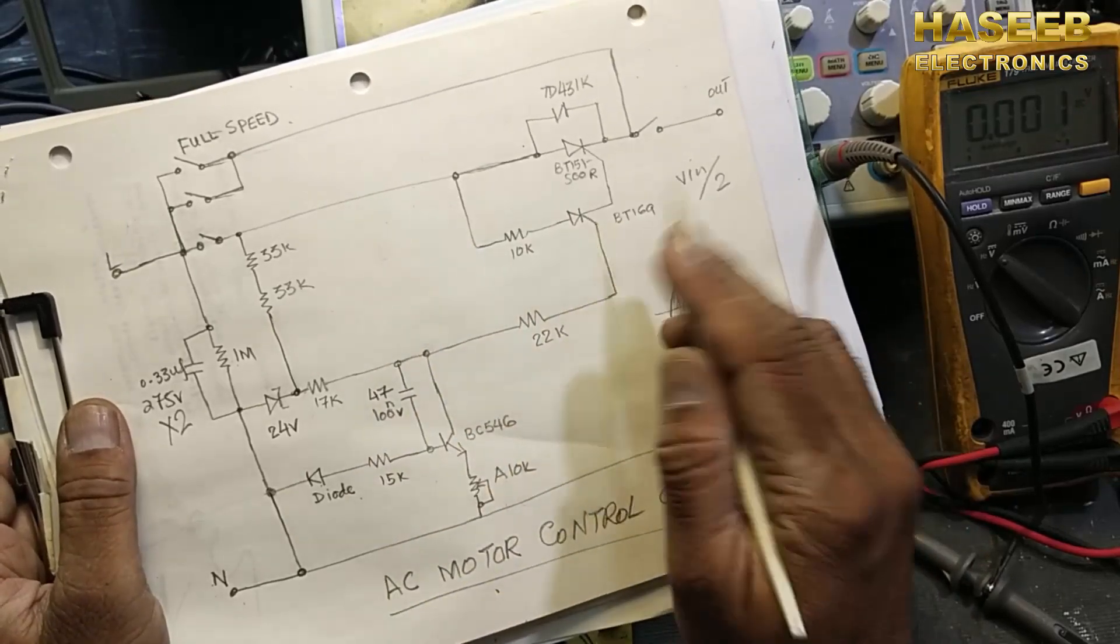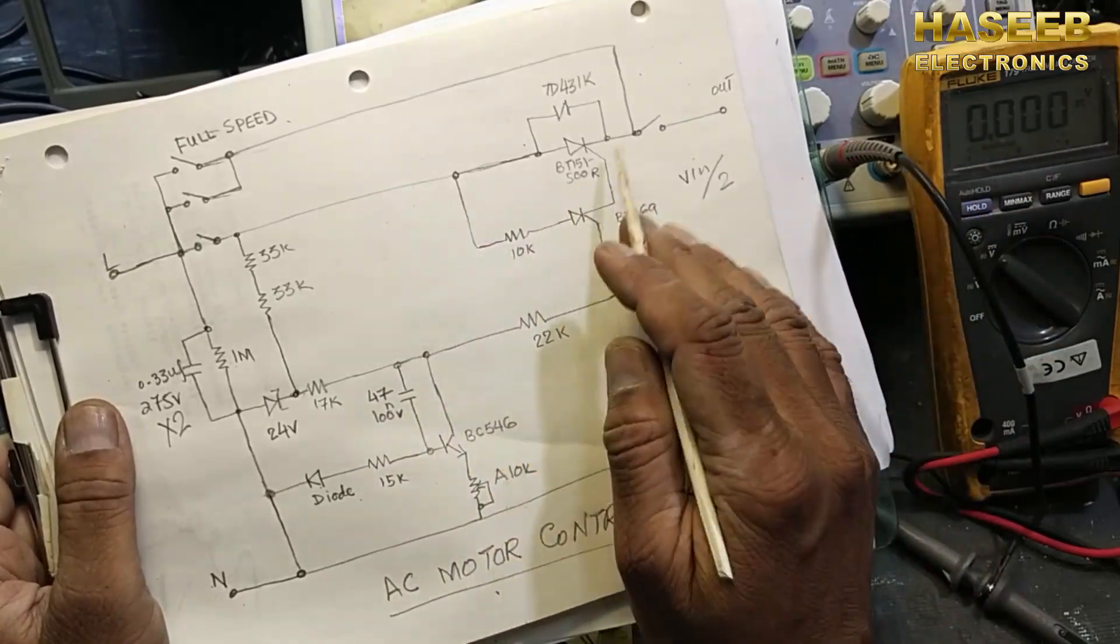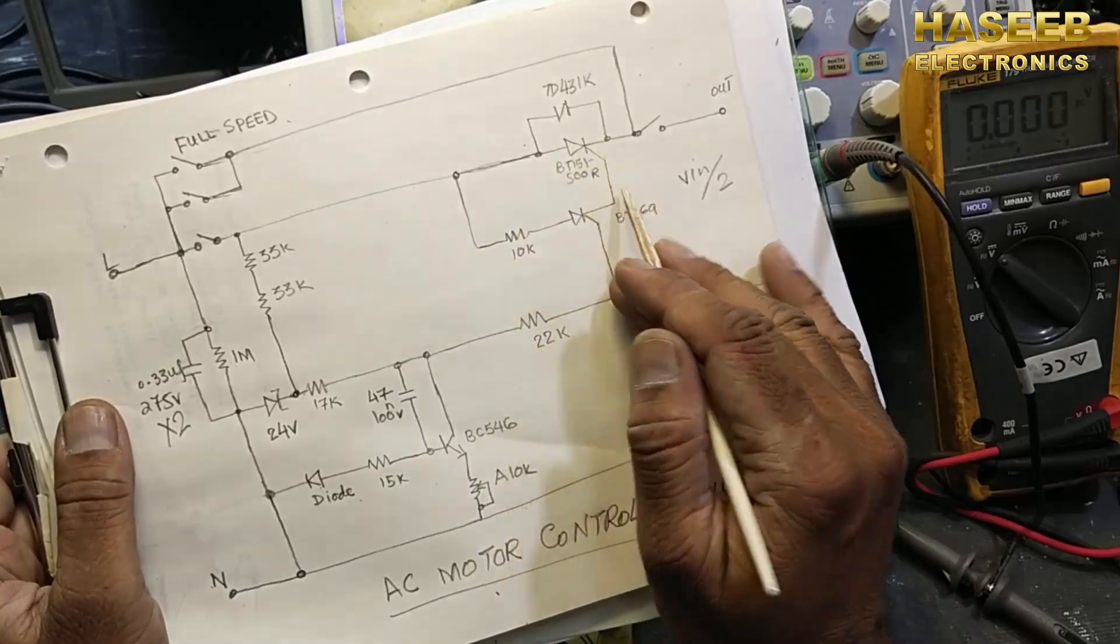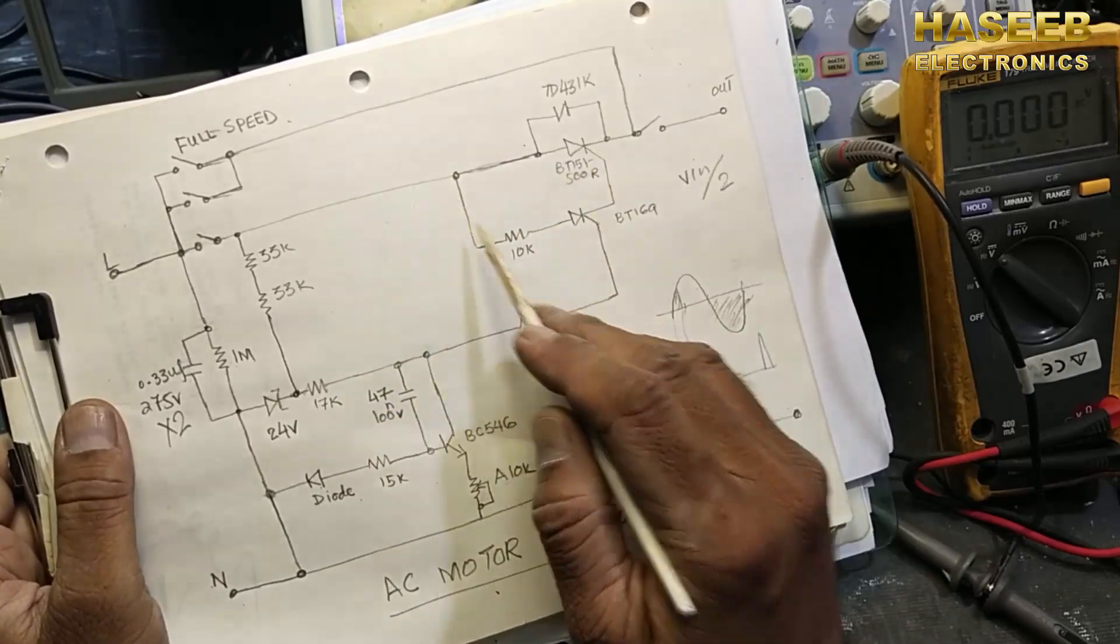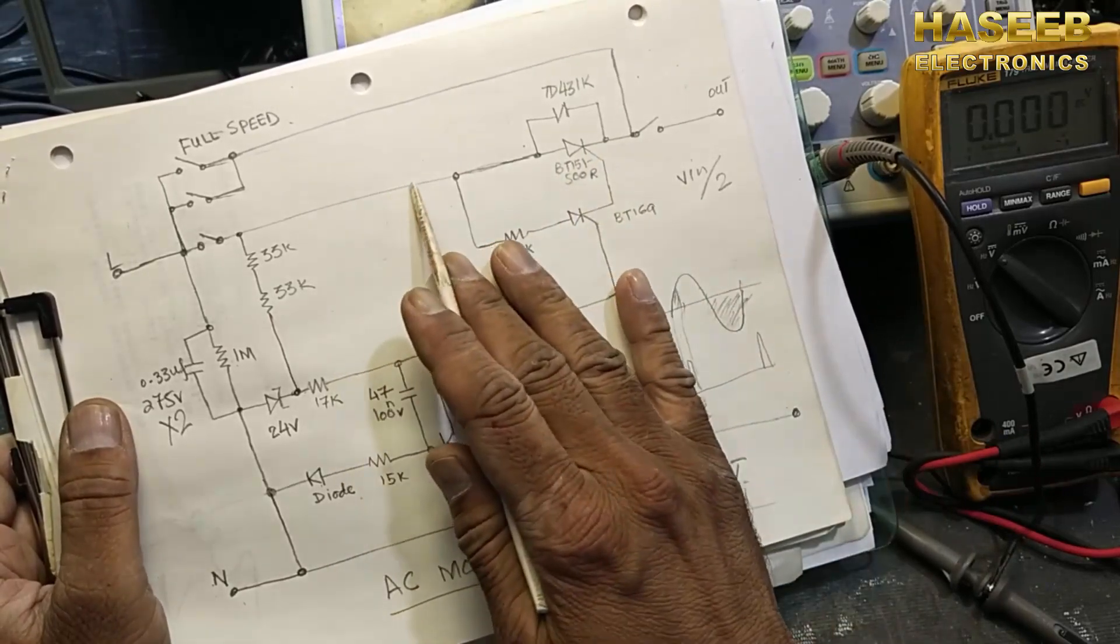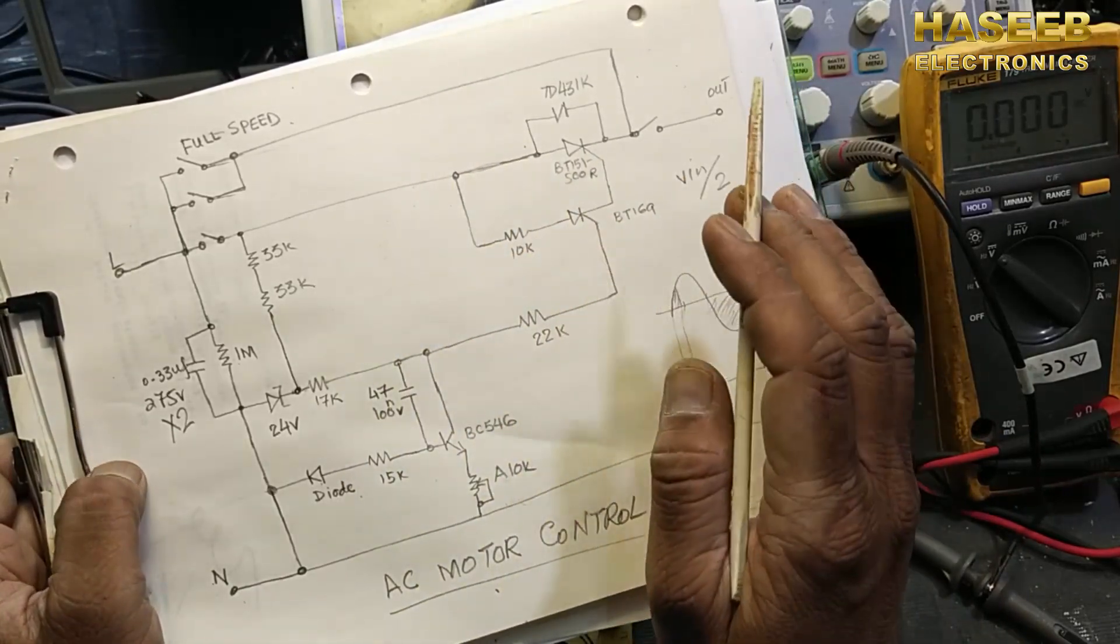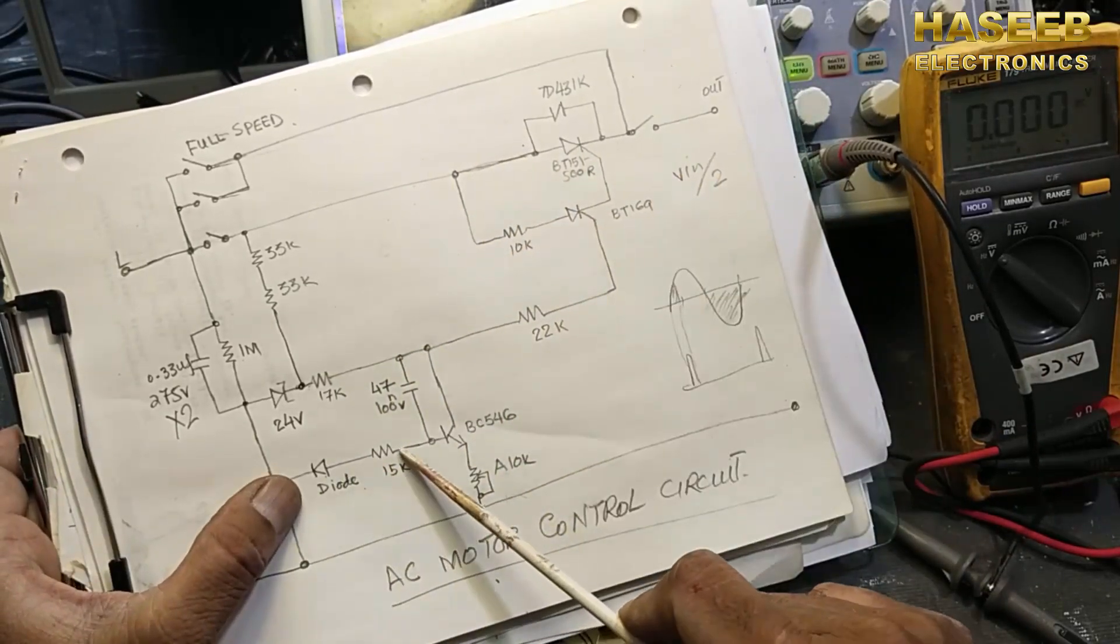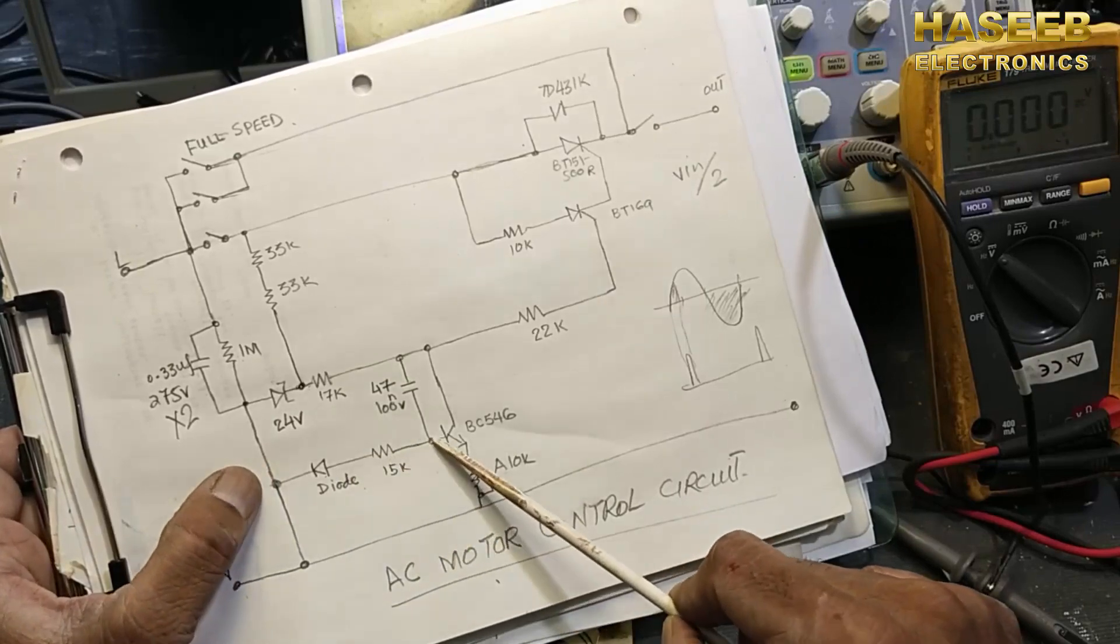But the trigger is removed at that time, this circuit will disable. Moreover, when the negative peak will come, this SCR will reverse bias and the circuit will reset again. This diode, this 15k resistor, is applying base biasing to this transistor BC546.